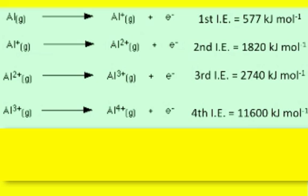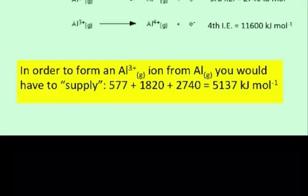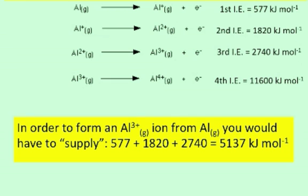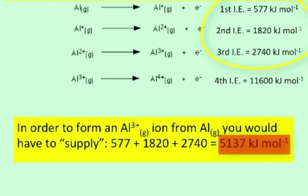If you said the energy required to make a three-plus ion is 2740 kJ per mole, then you've made the same mistake that lots of people make. If you said 5137 kJ per mole, fantastic — you've appreciated that to make a three-plus ion, you first need to remove one electron, requiring 577 kJ per mole, then the second electron, then a further electron. To form a three-plus aluminium ion, we need the total of the first three ionisation energies, which is about 5137 kJ per mole.